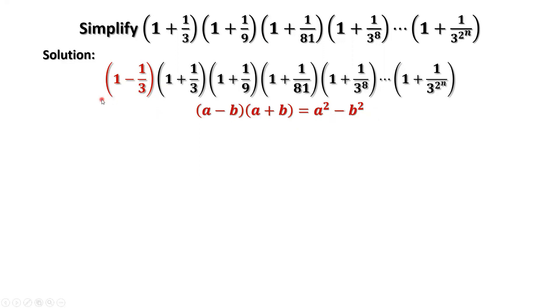Just consider the first two terms. It is a product. It is in the same format of this equation. A equals 1, b equals 1 over 3. The result of this product is 1 minus 1 over 3 squared.